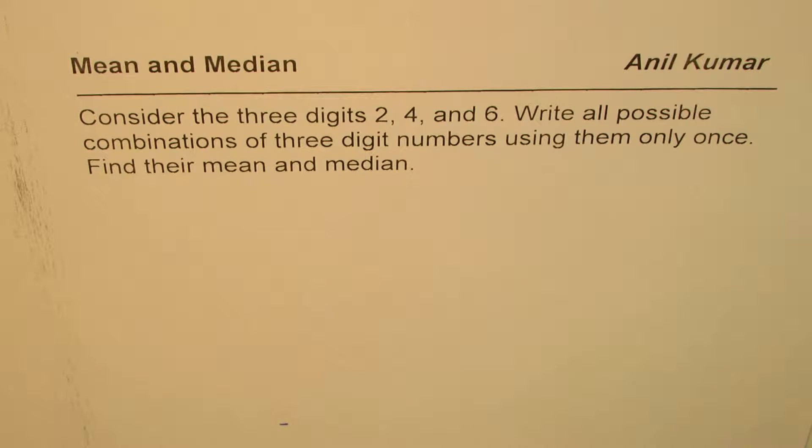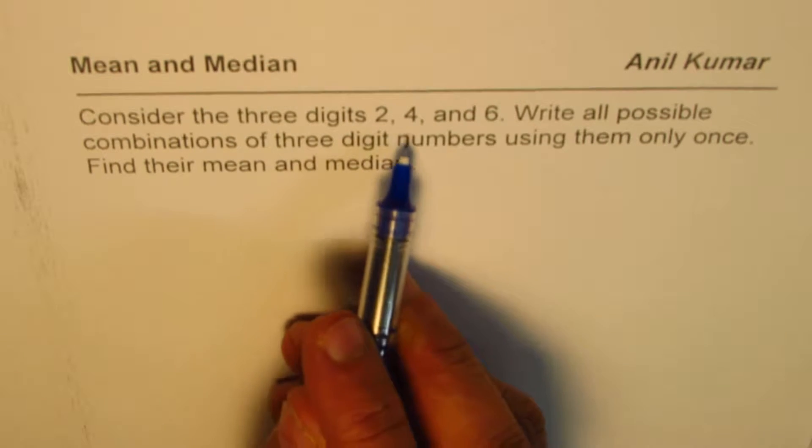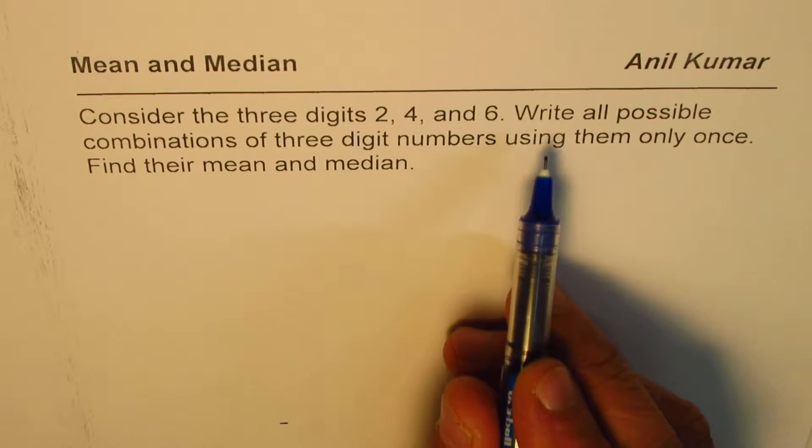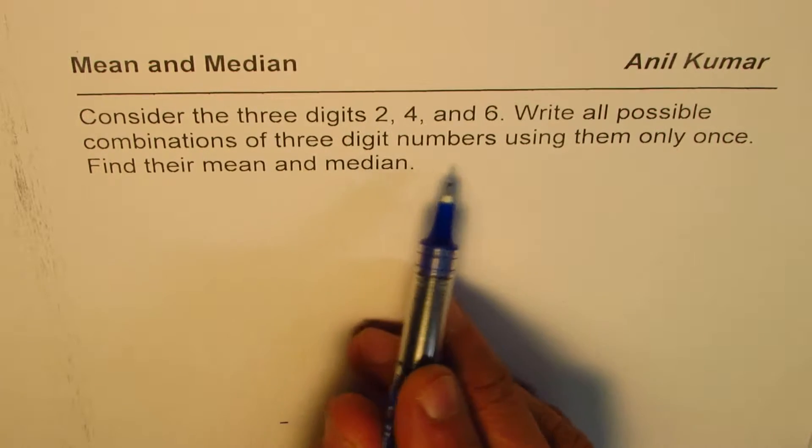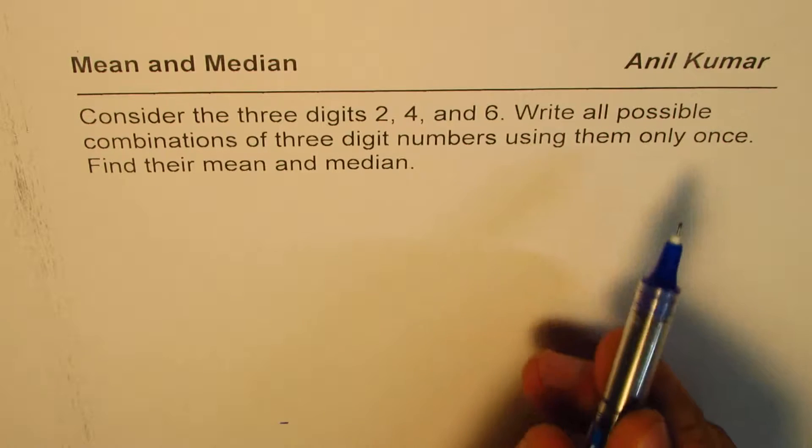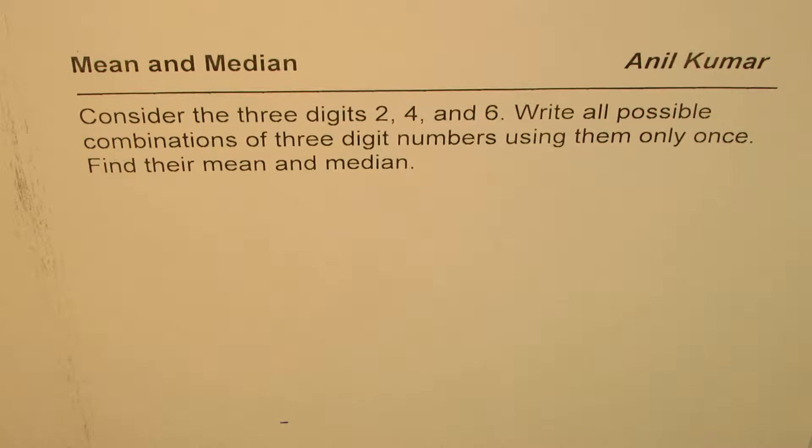I am Anil Kumar, sharing with you an excellent question on mean and median. Consider the three digits 2, 4, and 6. Write all possible combinations of three-digit numbers using them only once. Find their mean and median.